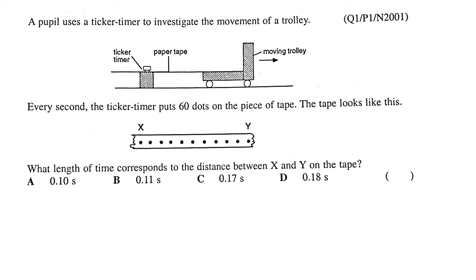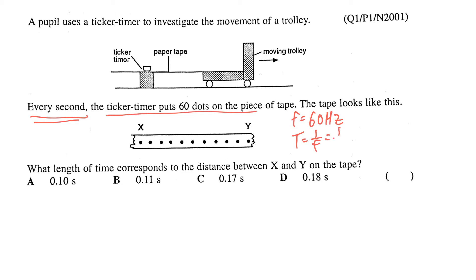In this video we'll go through some questions regarding ticker tape timers. In the first question, a ticker tape timer puts 60 dots per second on the tape, meaning the frequency is 60 hertz. To find the period — the time taken to punch another hole — it will be 1 over f, which is 1 over 60, giving 0.0167 seconds.